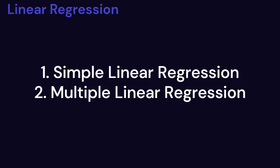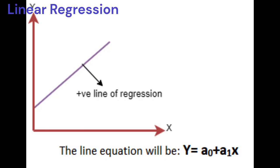A linear line showing the relationship between the dependent and independent variables is called a regression line. A regression line can show two types of relationship.